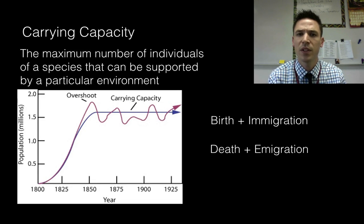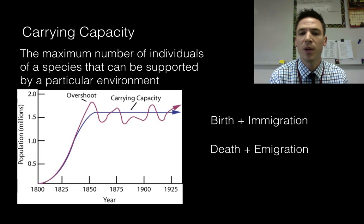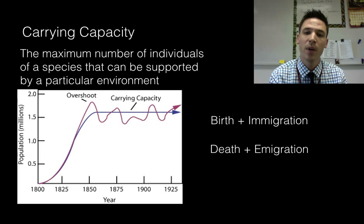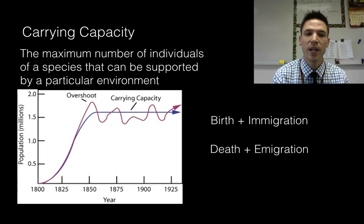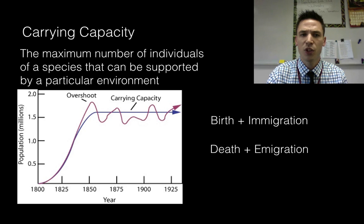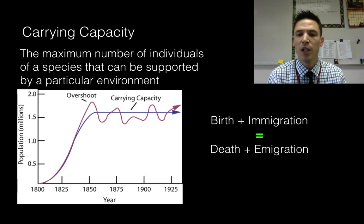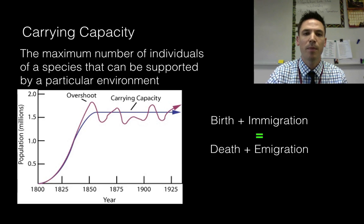Another way to think about carrying capacity is in terms of birth, death, immigration, and emigration. If you recall, we said when birth and immigration are higher than death and emigration the population is going up. When death and emigration are higher than birth and immigration the population is going down. Well if my population is not changing at all, what's the relationship between these? We'd say that they are equal. So when birth and immigration are equal to death and emigration we say that the population has reached the carrying capacity.